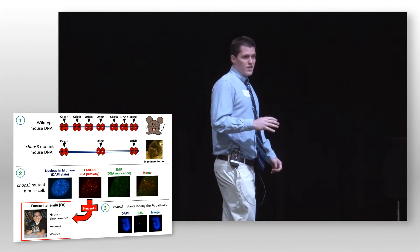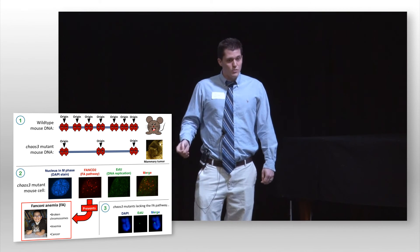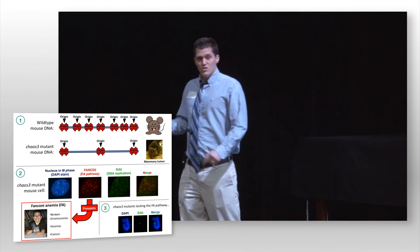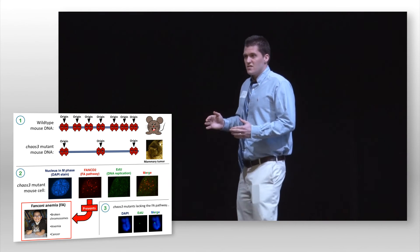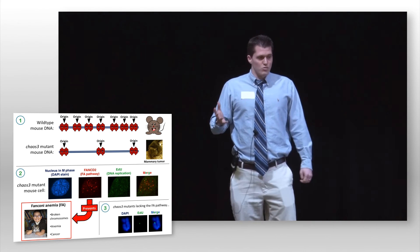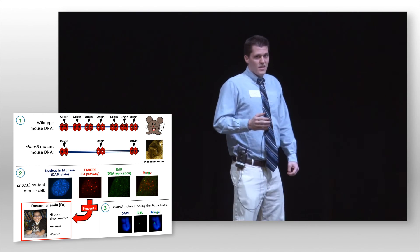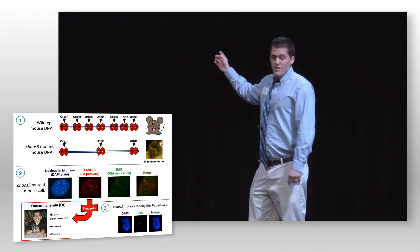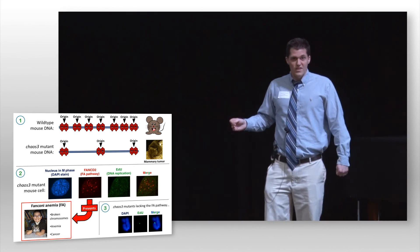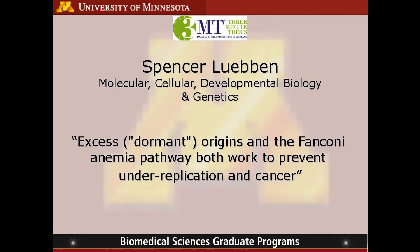This correlated with even faster cancer progression in the double mutant mice. Together, these findings suggest that under-replication is a significant driver of cancer, and they also suggest why FA patients are actually cancer-prone. Thank you.